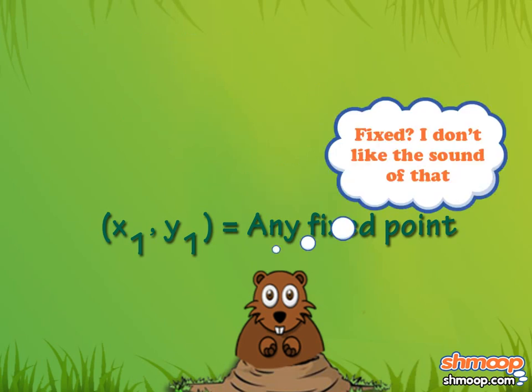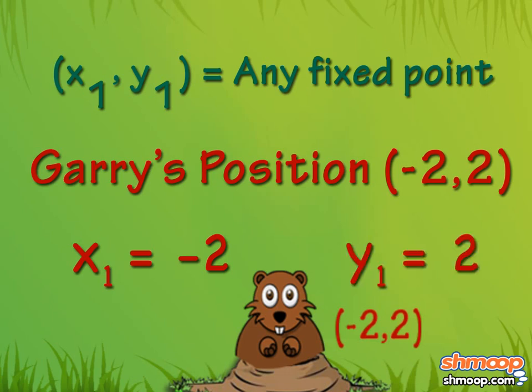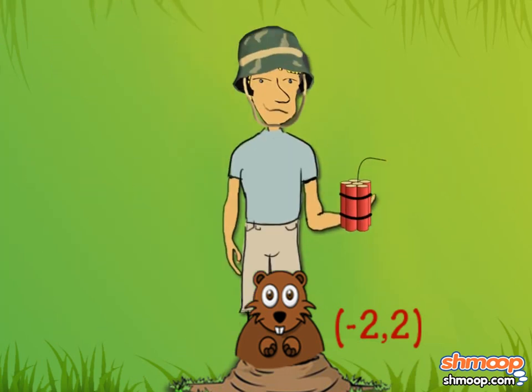Fixed? I don't like the sound of that. Let's use Gary's position as the fixed point x1, y1 — so x1 equals negative 2, and y1 equals 2. Looks like the greenskeeper also likes that point.